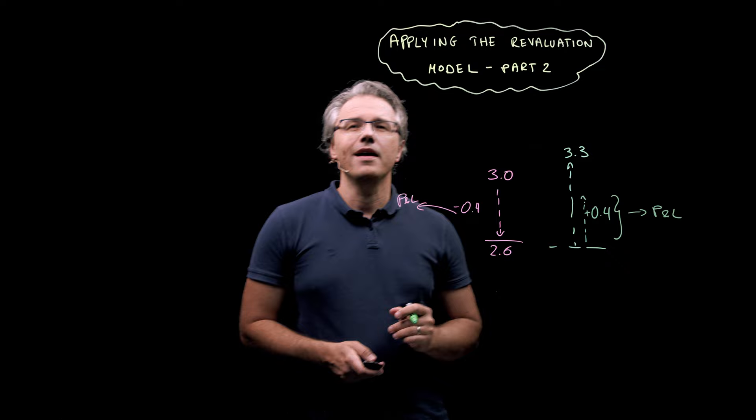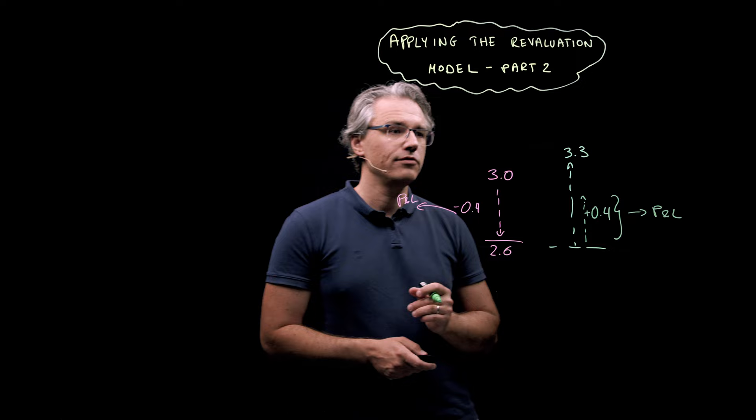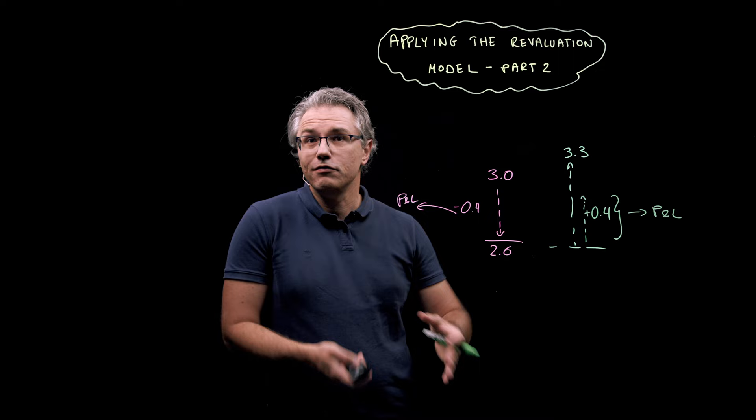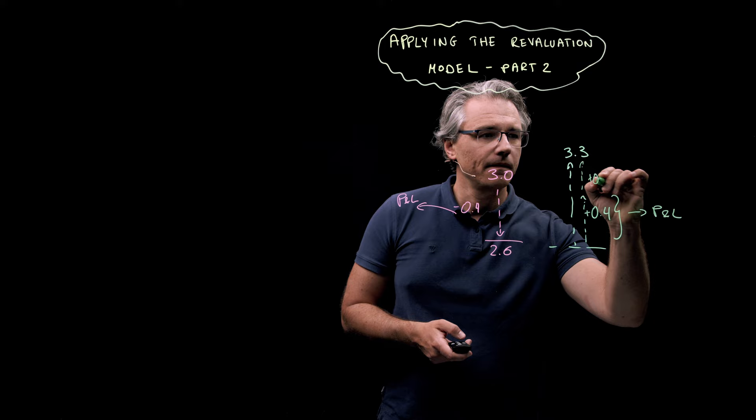Any further gain, so beyond this 0.4, will go to other comprehensive income and therefore will naturally increase the revaluation surplus as well. So, this is 0.3 million, which goes to OCI.